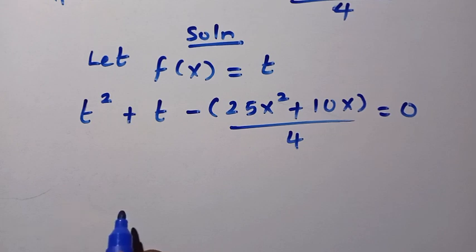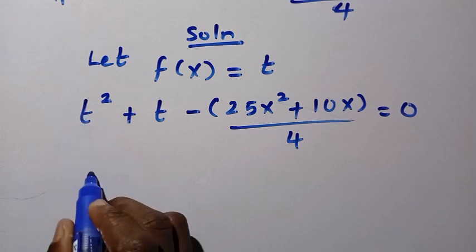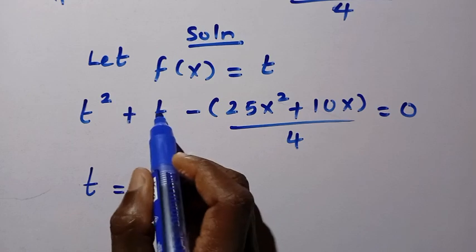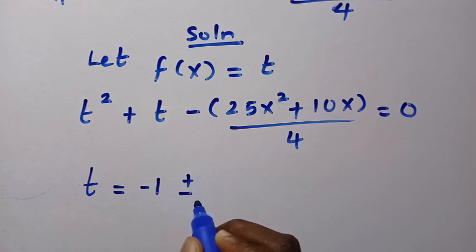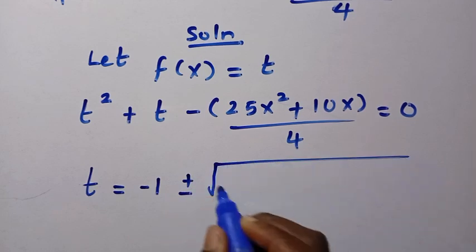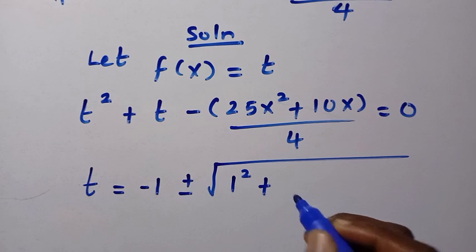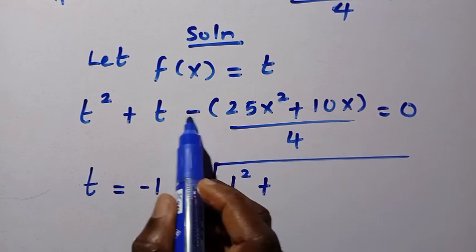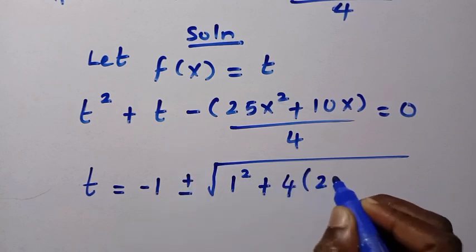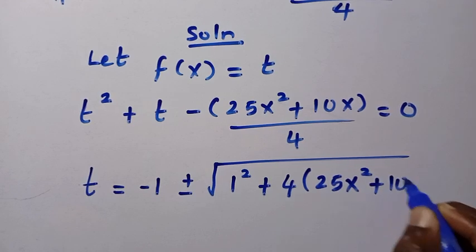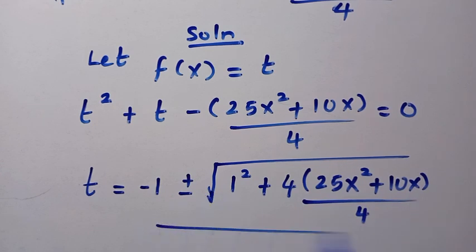Let's apply the quadratic formula, comparing with the general quadratic equation. Here t is the variable. We have minus b — the coefficient of t is 1, so minus b is minus 1 — then plus or minus the square root of b squared, which is 1 squared, plus 4ac. Because of the negative sign, we change it to positive, giving plus 4 bracket 25x squared plus 10x divided by 4.